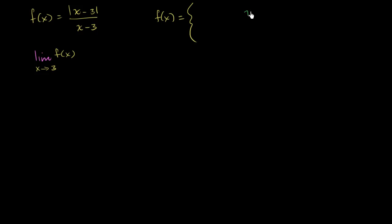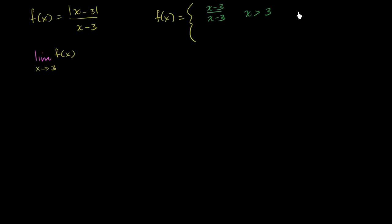When x is greater than 3, what does this function simplify to? Well, whatever I get in the numerator, I'm going to get a positive value. And then when I take the absolute value, it's going to be the exact same thing. So for x greater than 3, this is going to be the exact same thing as x minus 3 over x minus 3, because the numerator is positive and taking the absolute value doesn't change its value.